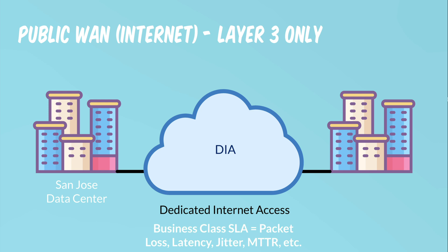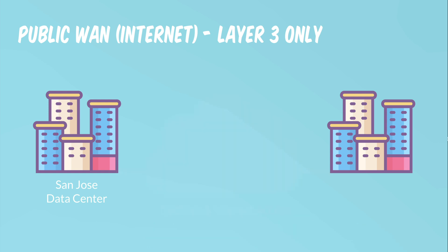For customers with a really large operation, I recommend having DIA circuits at their key locations. DIA circuits are expensive, but what I like most about them is that they're symmetrical in nature. So if you get a 10 gig DIA, that's 10 gig up and 10 gig down.